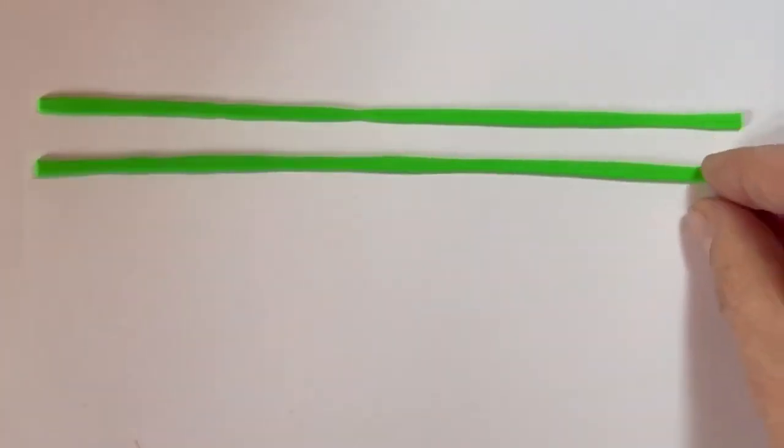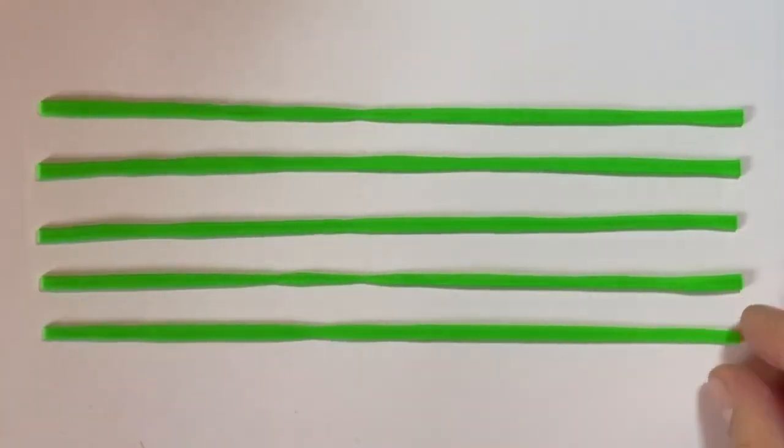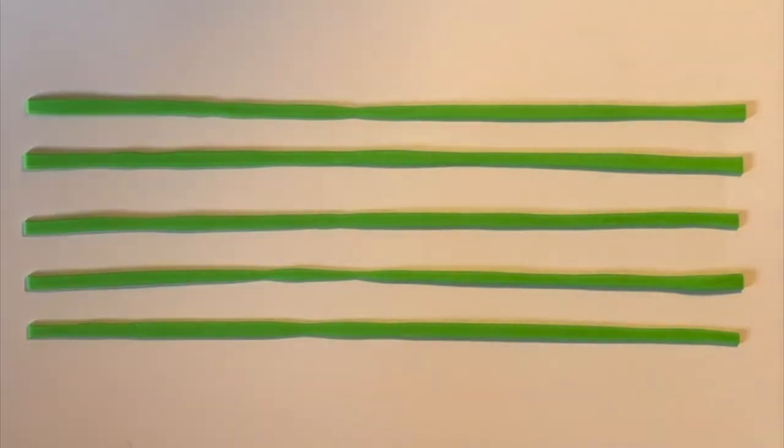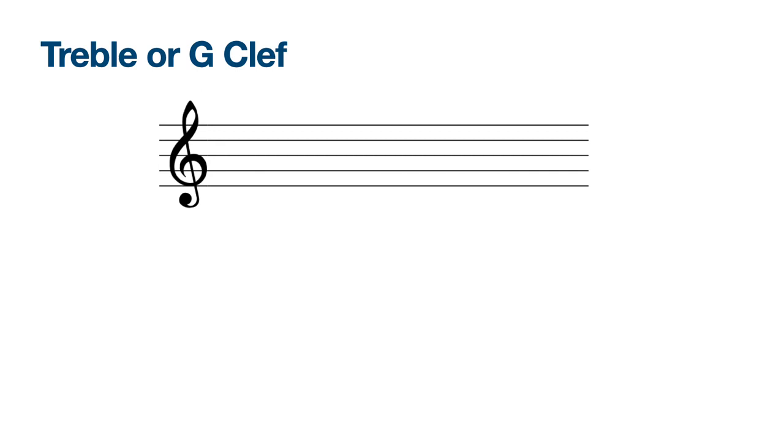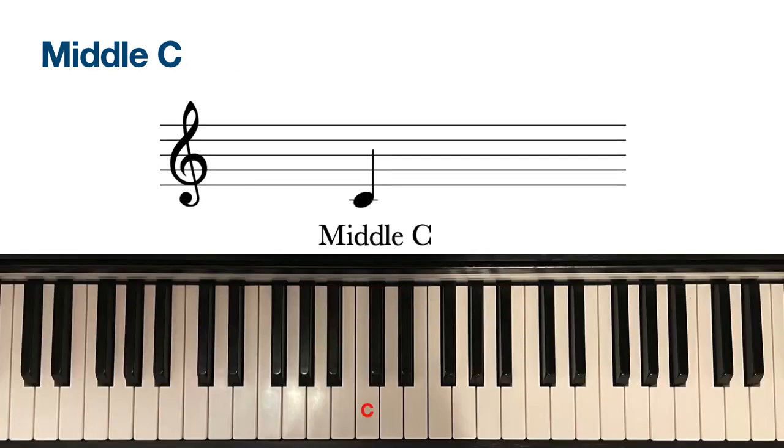Music is written on the stave or staff, the five lines. The curly figure is called the treble or the G clef and this usually shows which notes your right hand plays. For the time being we're going to add a little line underneath the stave for middle C. Don't worry about the rest yet, we'll look at those later. Just recognise middle C on the treble clef and how it's written.